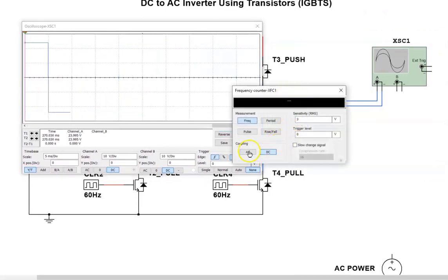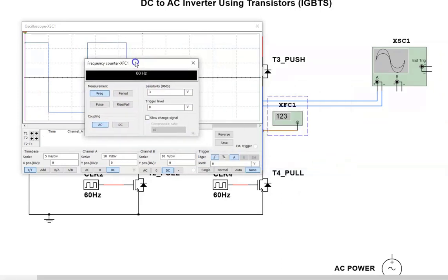Now I'm going to click on the frequency counter. I have to set it to AC coupling and it's operating at 60 Hertz. What you'll notice when we start working with the three phase inverter, we can adjust that to control the speed of the motor and you'll see how that's done.